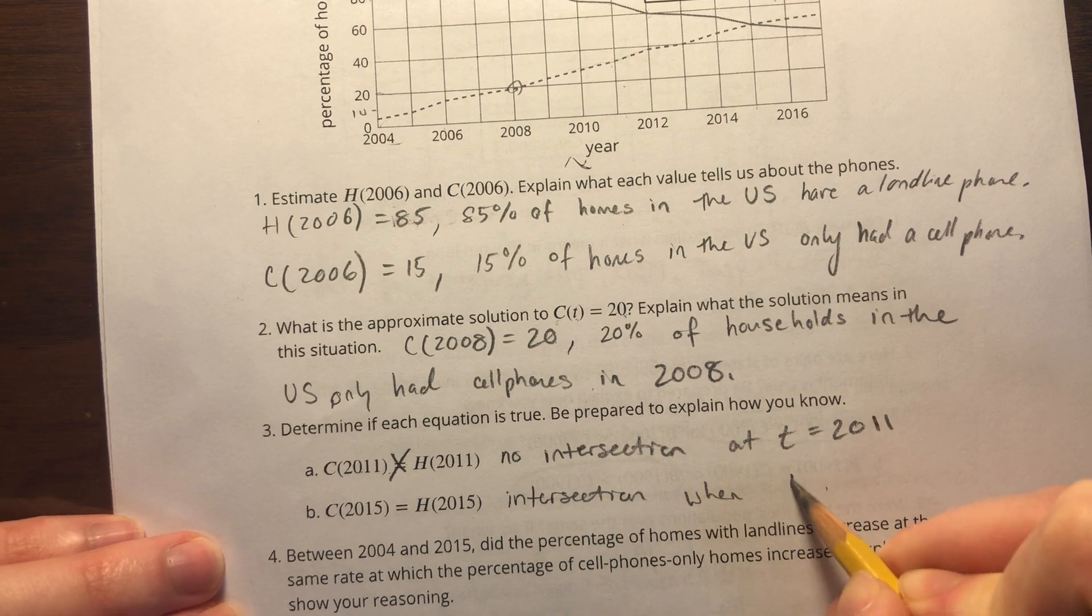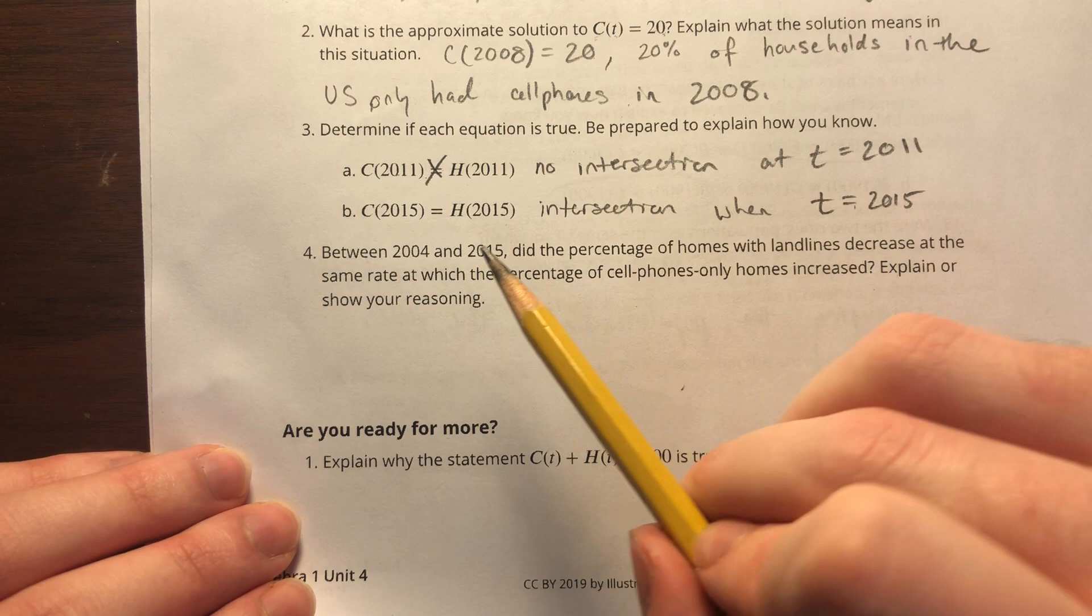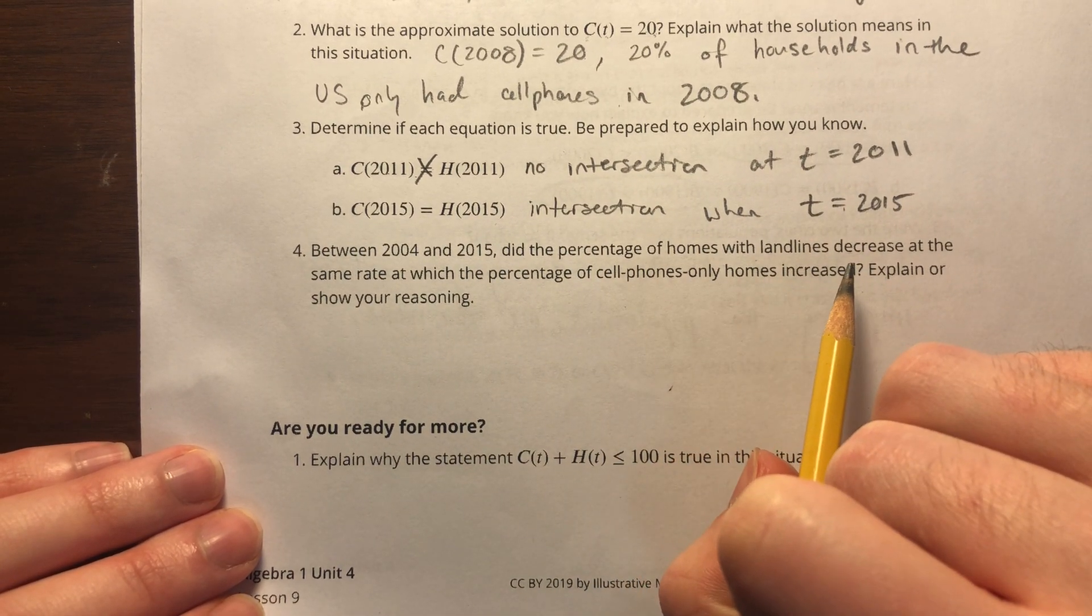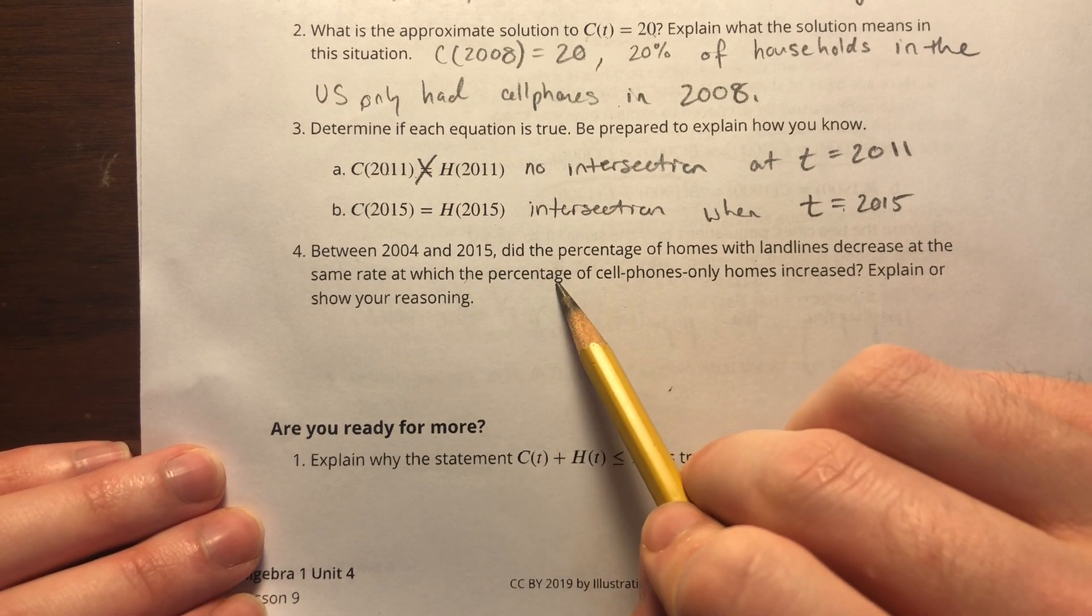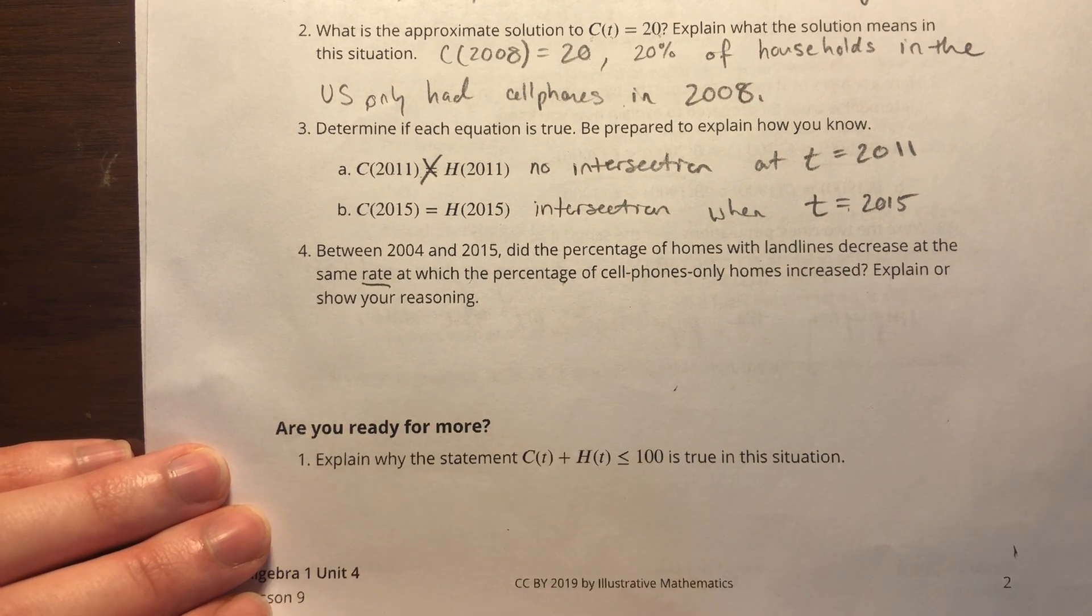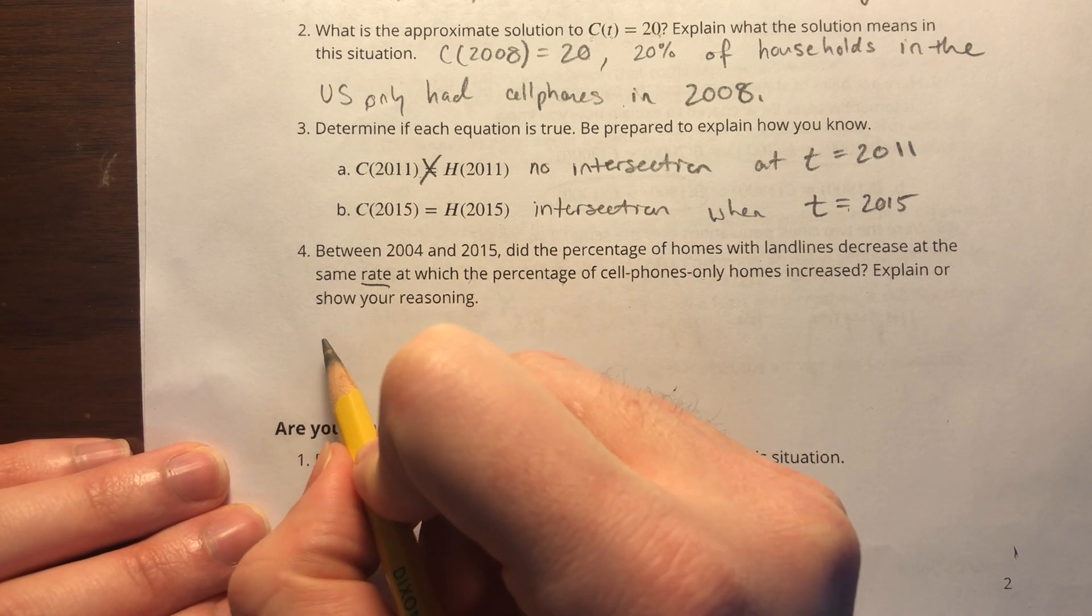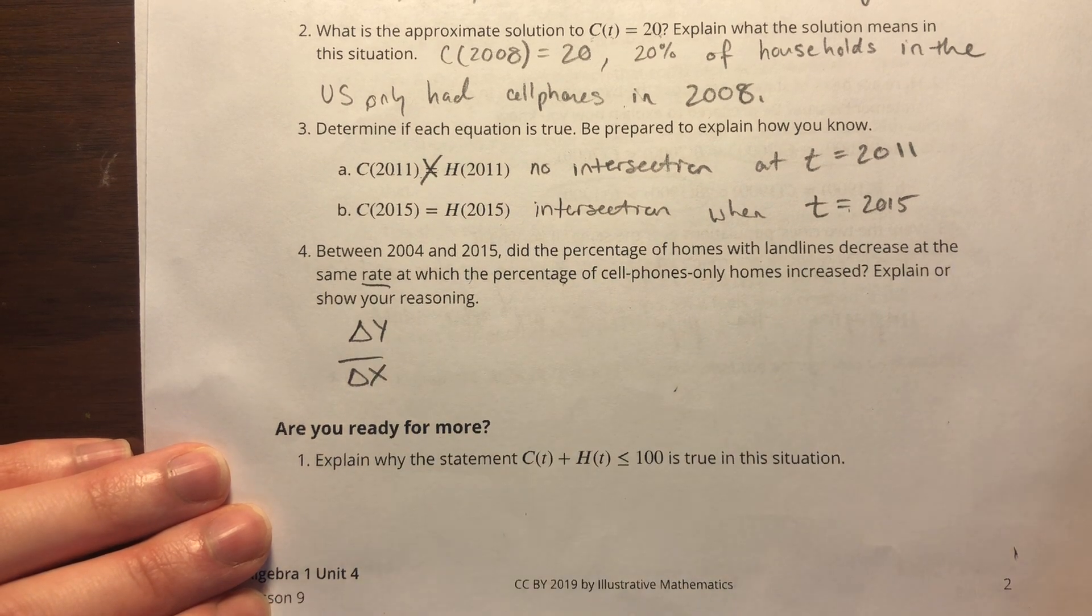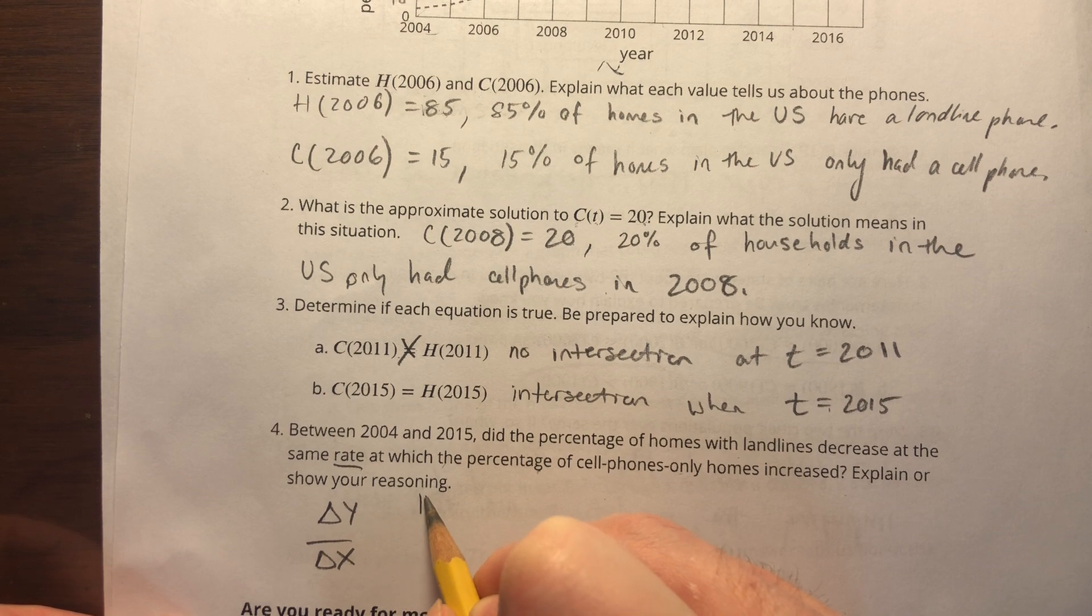Between 2004 and 2015, did the percentage of homes with landlines decrease at the same rate at which the percentage of cell phone only homes increased? Explain or show your reasoning. If we're talking about a rate, that means a rate of change, so we're looking for delta y over delta x. Let's do landlines first.